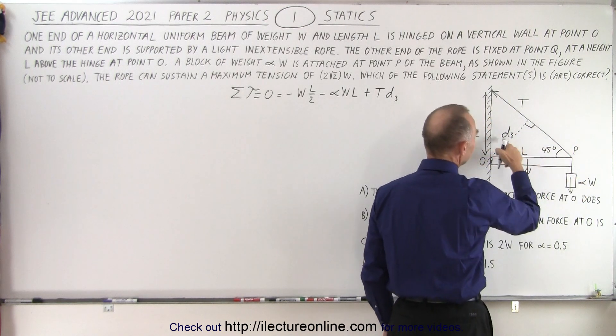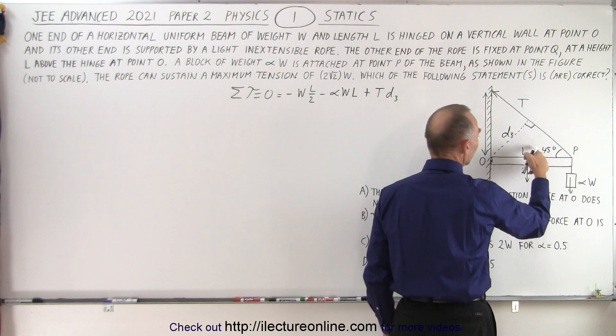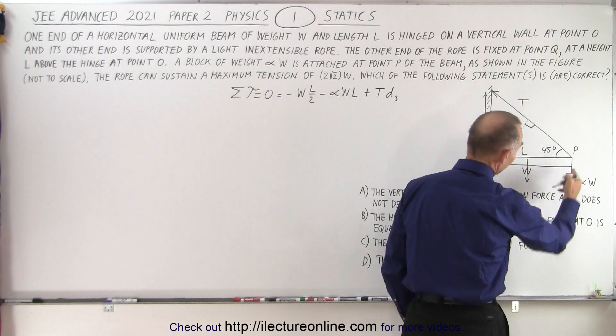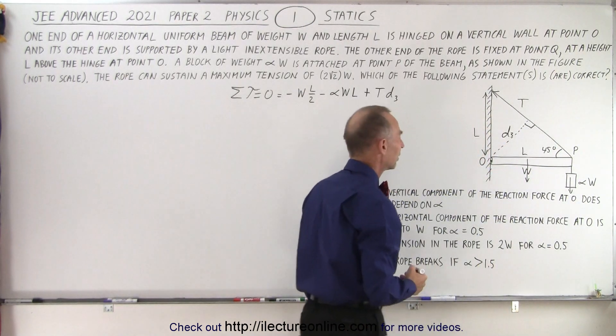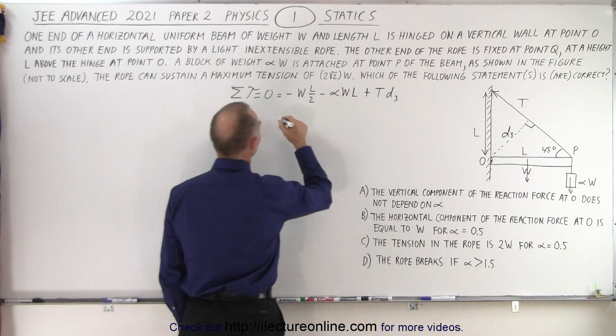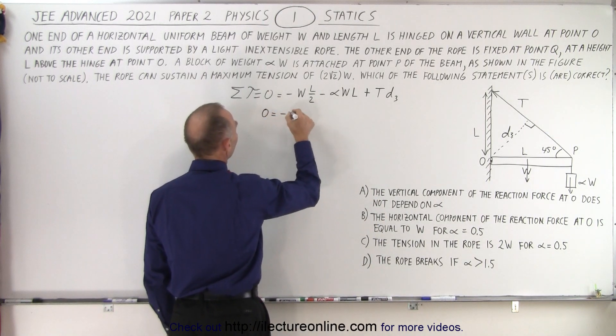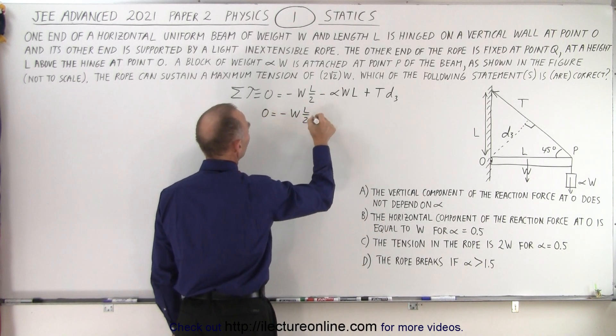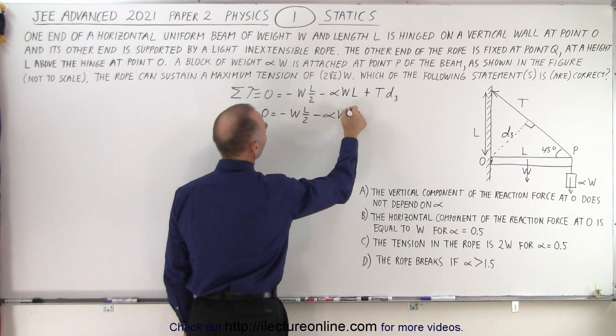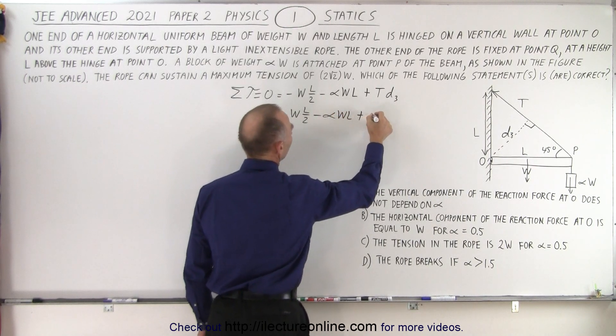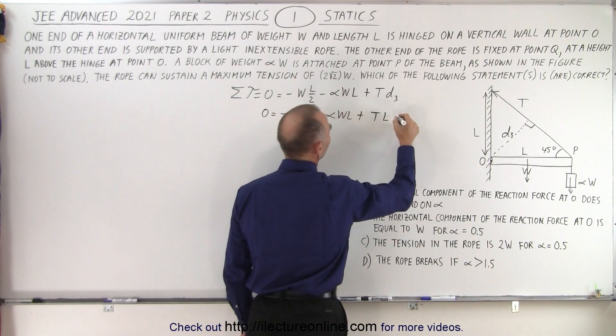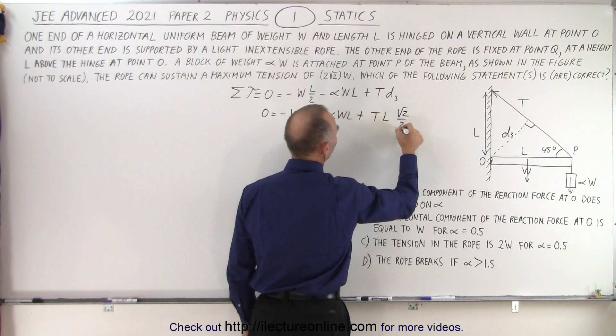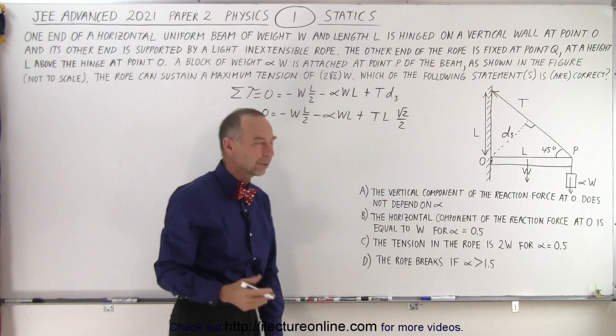This here is D3, but notice if this is L and this is L, then we know that this is a 45 degree angle. So essentially D3 is L times the sine of 45 degrees. So this can be written as 0 equals minus W L over 2 minus alpha W L, and then plus the tension times L times the square root of 2 over 2, because that's what the sine of 45 degrees is equal to.